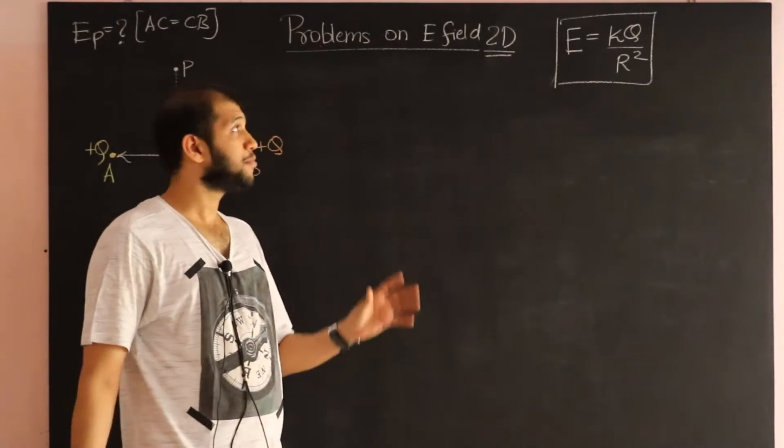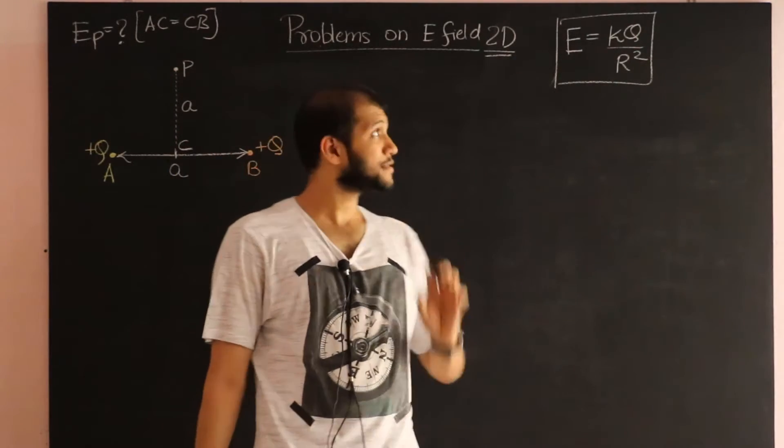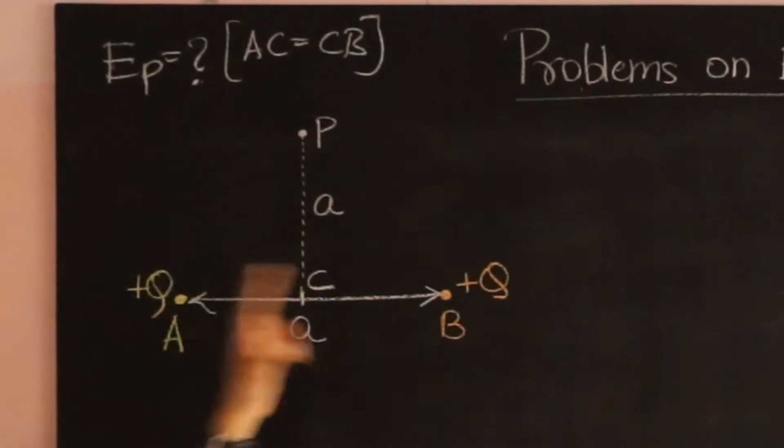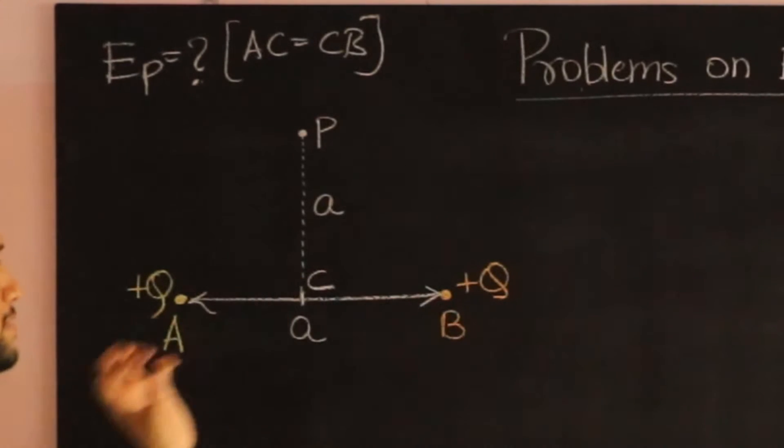Okay, now we have a problem in two dimensions. So we have two charges A and B, plus Q and plus Q, similar charges, same magnitude, separated by distance A.